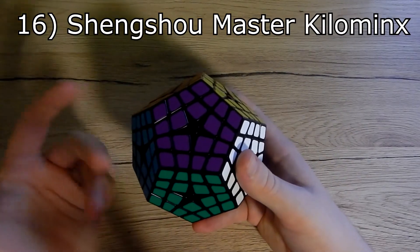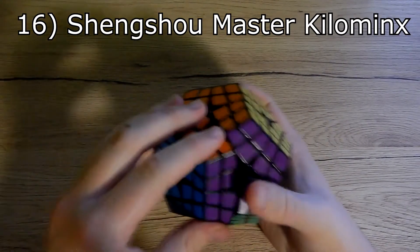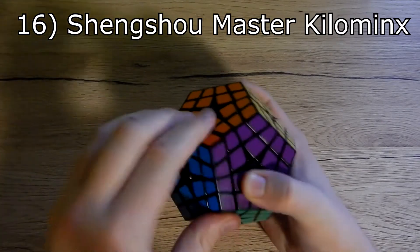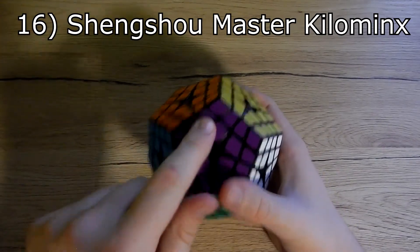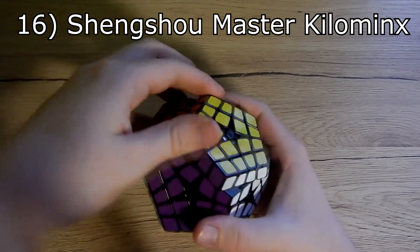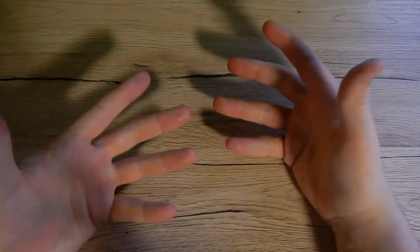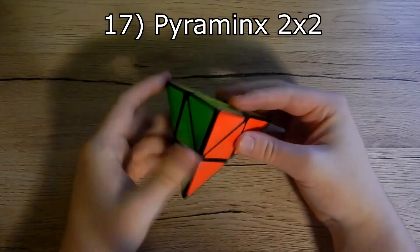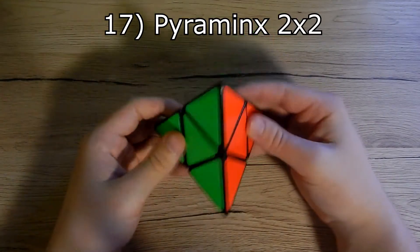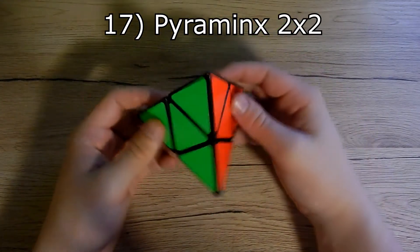Next we have a 4x4 Megaminx or Master Kilominx, and it is from Shengshou. These layers are better turning than these.